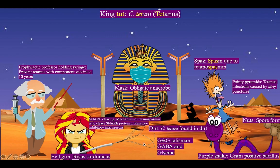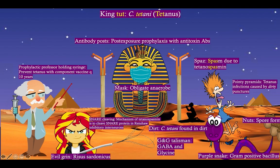And here we have our professor of Egyptology, the prophylactic professor, reminding you — he's holding a syringe — that we can prevent tetanus with a component vaccine every 10 years. Also notice these antibody posts surrounding King Tut, which remind you that we can give immune globulin or antitoxin antibodies as post-exposure prophylaxis for tetanus.